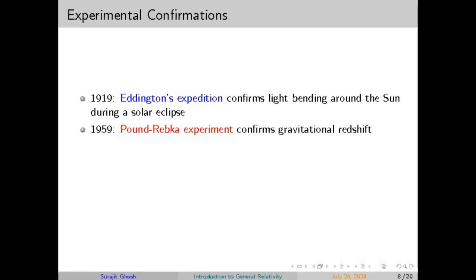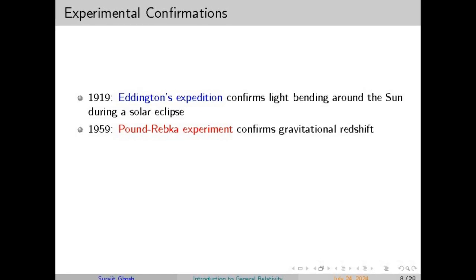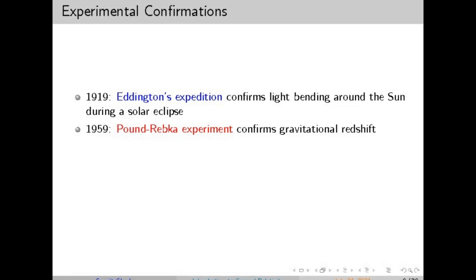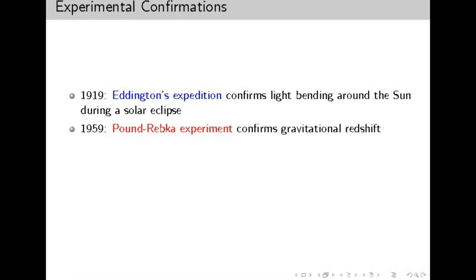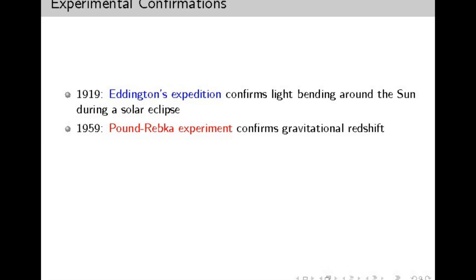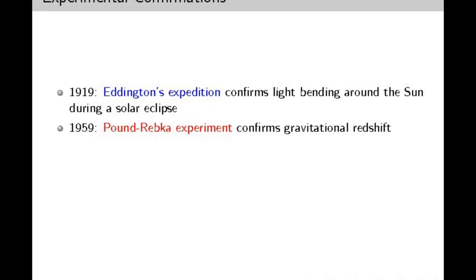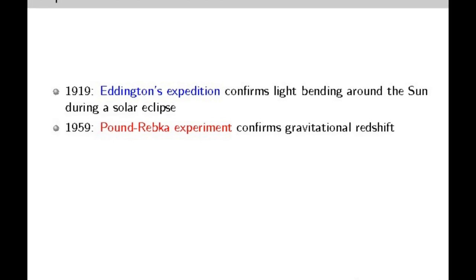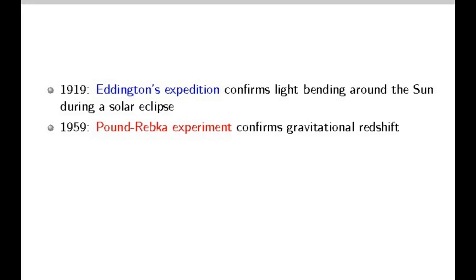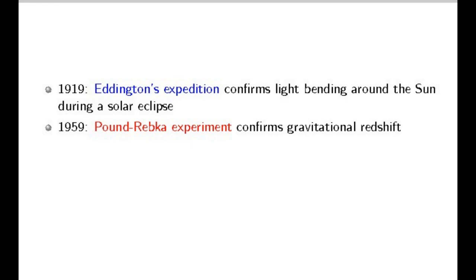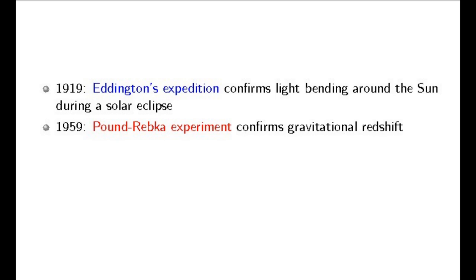Consider the case of a simple spherical mass like a planet or a star. The equations show how spacetime around such a mass is curved in a predictable way. This solution, known as the Schwarzschild solution, describes the spacetime geometry around a non-rotating, spherical object, allowing us to understand phenomena like the orbits of planets and the behavior of light near massive objects. These equations are not only theoretical but have been tested and confirmed — for example, through the bending of light around the sun during a solar eclipse, and later through precise timing of clocks in different gravitational fields and the detection of gravitational waves.